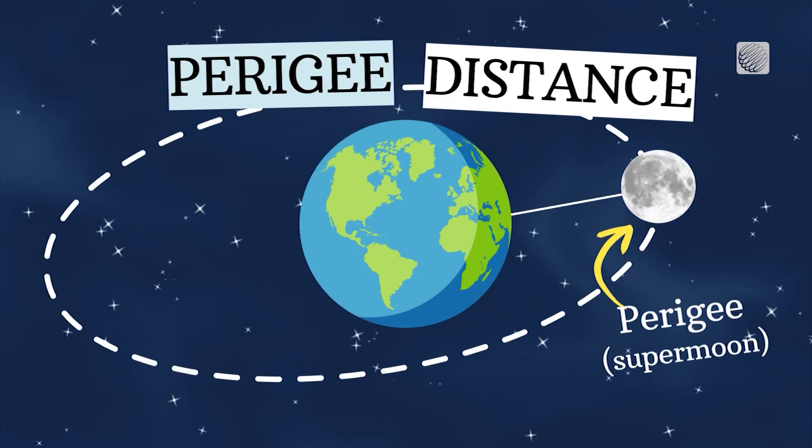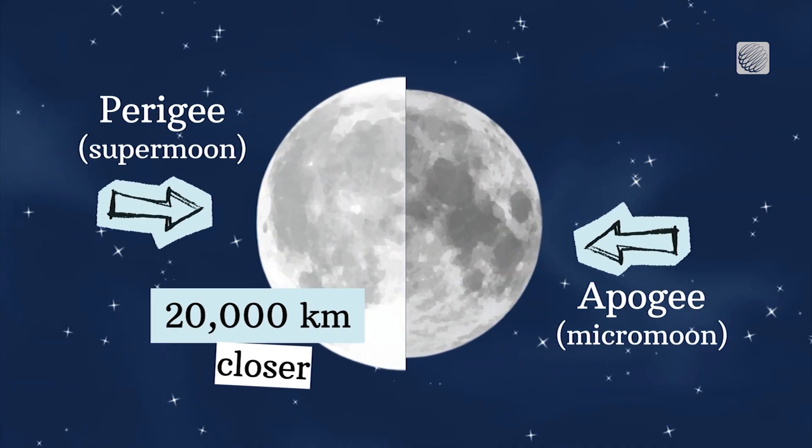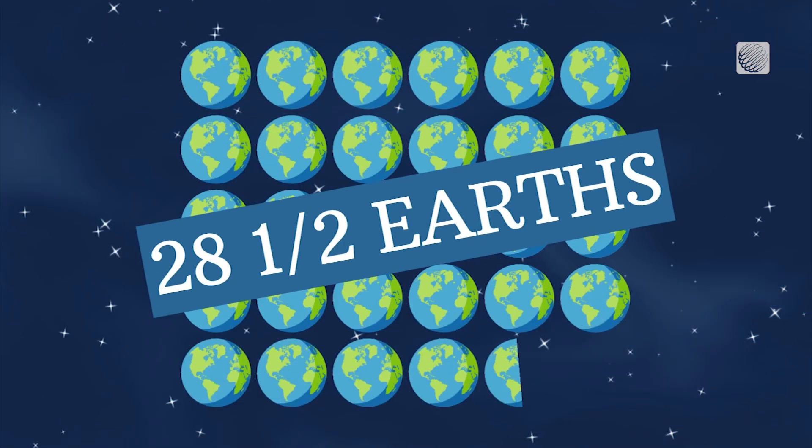The moon's perigee distance changes every time it travels around the Earth. But on average, supermoons are roughly 20,000 kilometers closer than typical full moons, or 28 and a half Earths away.